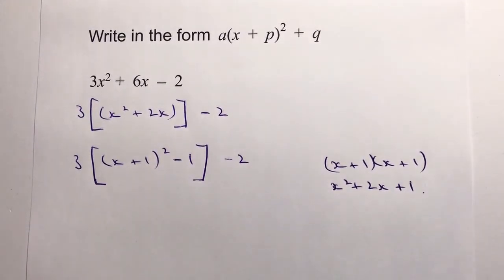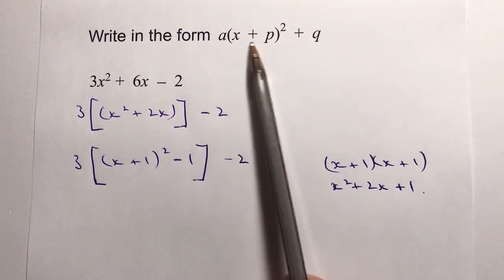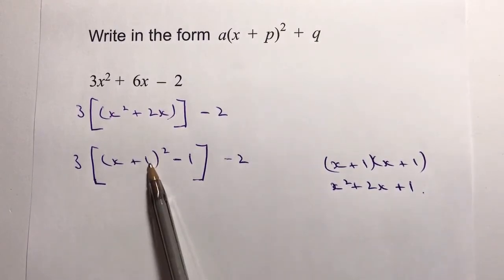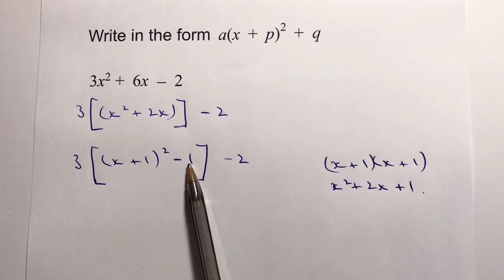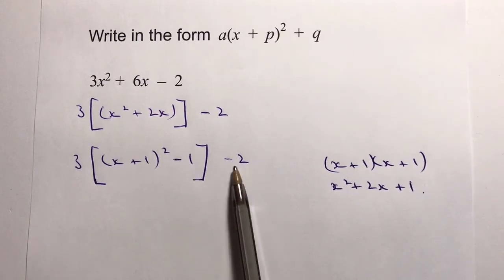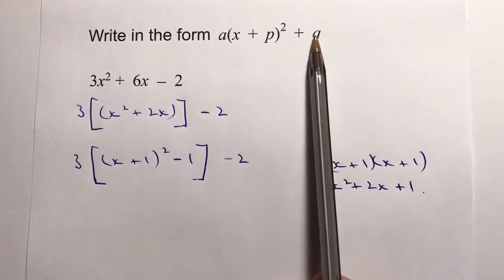Remember we're trying to put it in this form. I'm okay with these two bits, but I need to get rid of this -1, and also this number at the end is going to change.